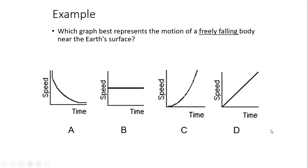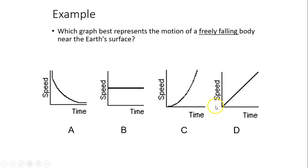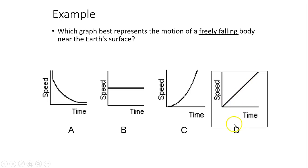Let's take a look at this graph. Which graph best represents the motion of a free-fall object? This is speed. We know for free-falling, speed increases at a constant rate because acceleration is constant. The answer is D.